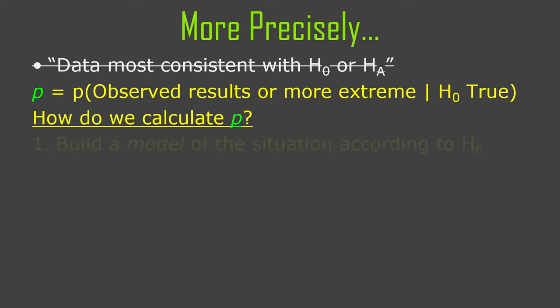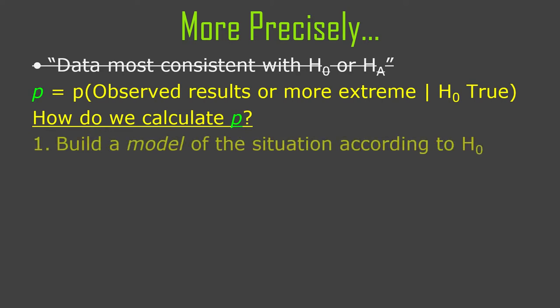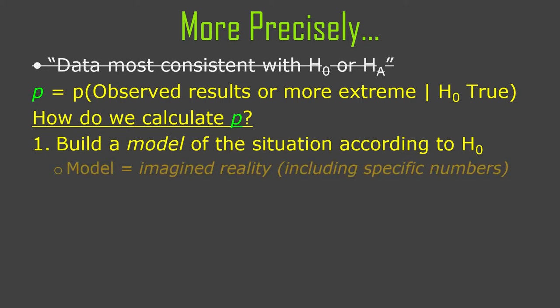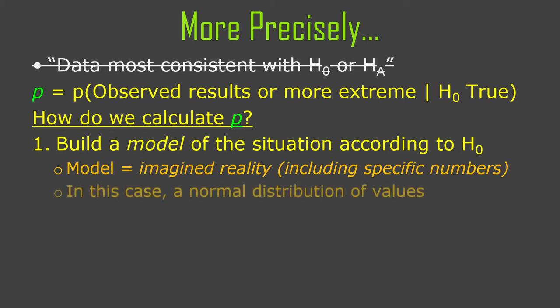We have to build a model. A model sounds fancy and statistic-y, but it just means we specify as much about a situation as we can. We specify the situation according to the null hypothesis — we imagine the reality of the null hypothesis, and it becomes a model when we have specific numbers attached to it.